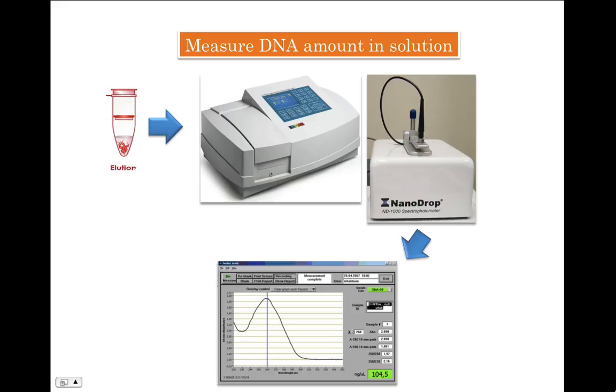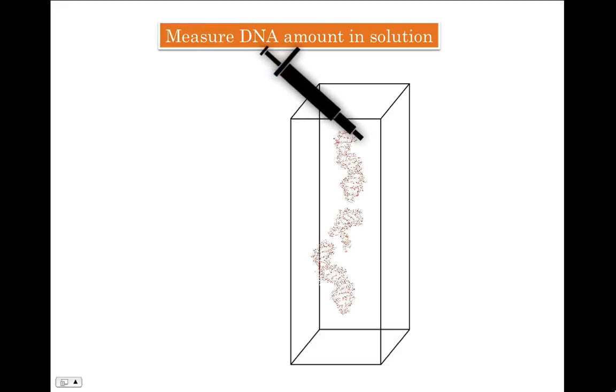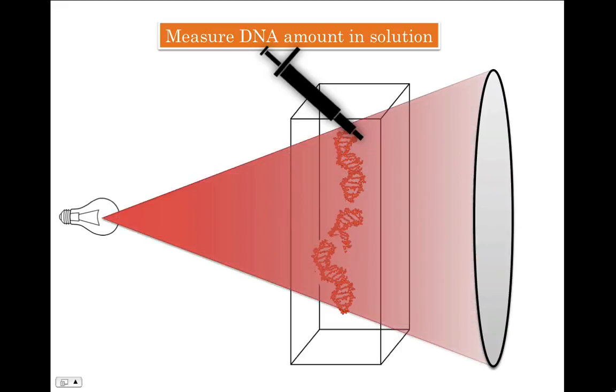DNA measures maximum light at 260 nanometers. Let's imagine you took some extracted DNA and put it in a cuvette for measurement by spectrophotometer.